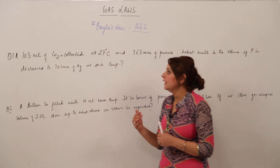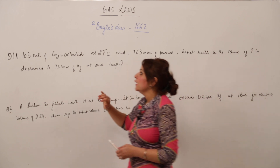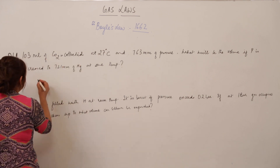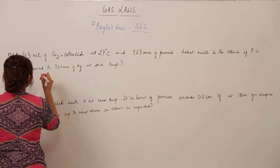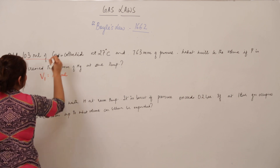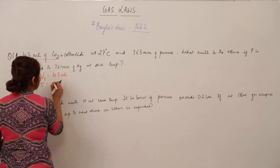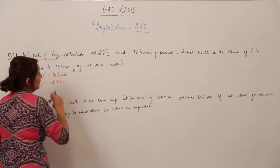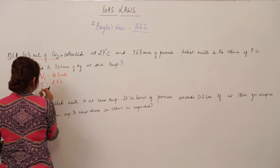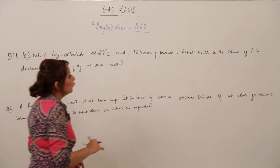We are now solving numericals based on Boyle's law. In this case, 103 ml of CO₂ is collected, so the volume V1 = 103 ml. This CO₂ is collected at 27 degrees Celsius, meaning the initial temperature of the gas is 27°C and the pressure is 763 mm of mercury.